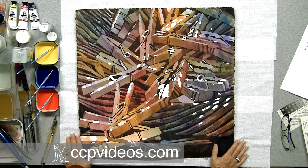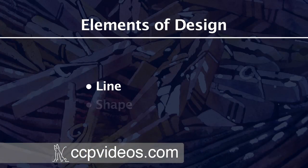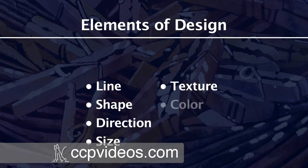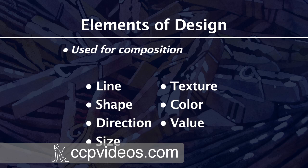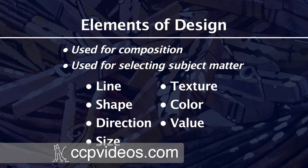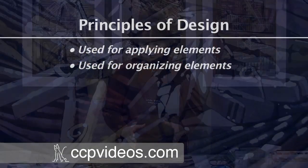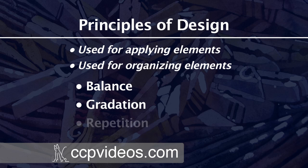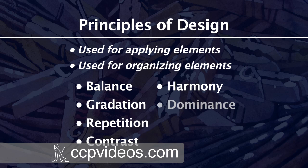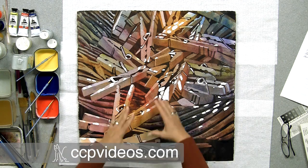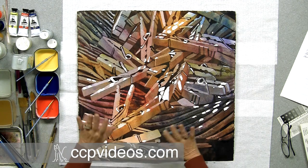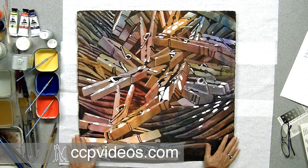That's where you get your list of elements and principles of design. Elements are line, shape, direction, size, texture, color, and value — these are the tools we use to compose our sketches and drawings, and to select subject matter. The principles are how we apply those tools: balance, gradation, repetition, contrast, harmony, dominance, and unity. The elements are the tools you use to put it together; the principles are the tools you use to organize it.